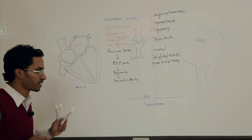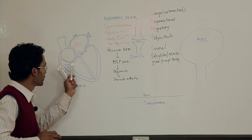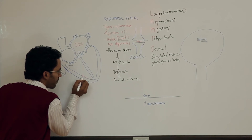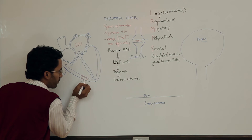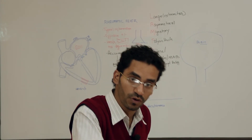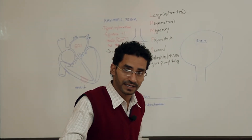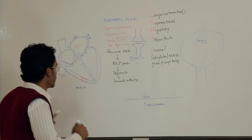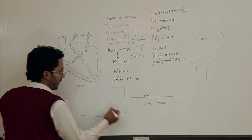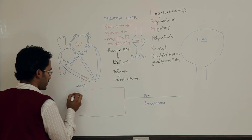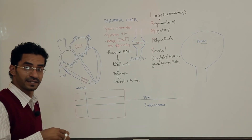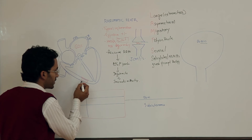The heart has three layers from inside to outside: the endocardium, the myocardium, and the pericardium. Now let us see what happens in each one of them – endocardium, myocardium, and pericardium.